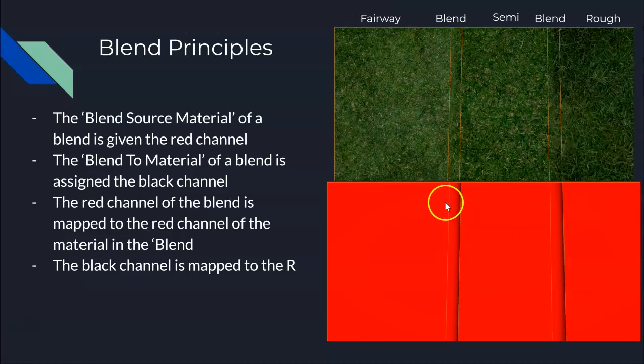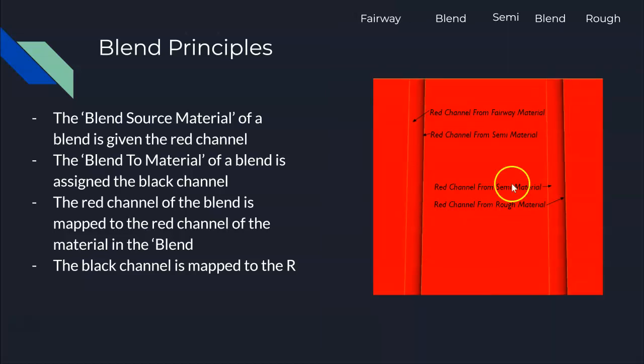Now this blend that you see here, which blends the material from fairway to semi, consists of two colors: red and black. The source material is fairway over here. The destination or blend to material is semi over here. So red of this blend represents fairway, black of this blend represents semi. This blend here is really interesting - we have two separate blends where one of them, the black of that blend, is the red channel of the semi, and the red of this blend is the red channel of this semi. Like I said earlier, what these colors represent is locally significant to that mesh and it's assigned to that mesh.